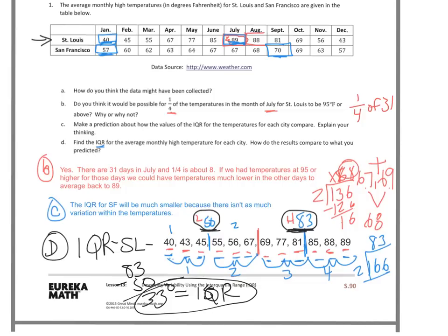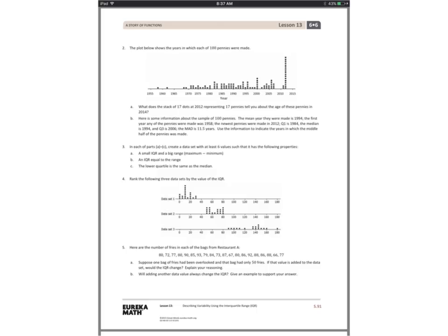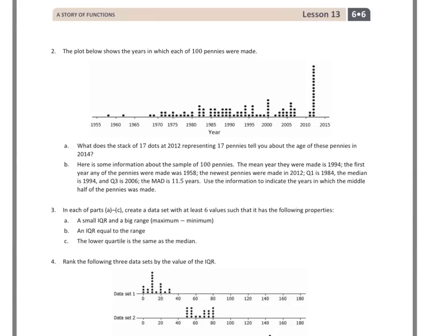Now you would go through and do the same for San Francisco — put the values in order from least to greatest, find the median, find the lower and upper quartile medians, and find the difference. Moving to page 2, we have a dot plot showing the years in which each of 100 pennies were made. Question A asks: what does the stack of 17 dots at 2012 tell you about the age of those pennies in 2014? It tells us that 17 pennies were made in 2012, and they would be 2 years old in 2014.